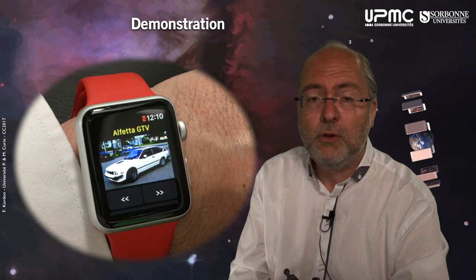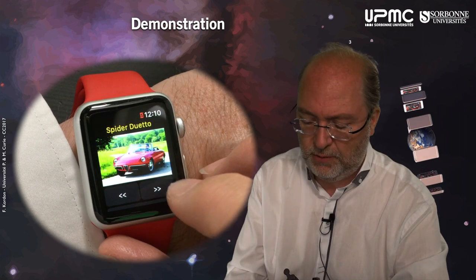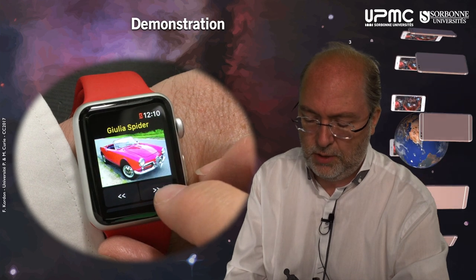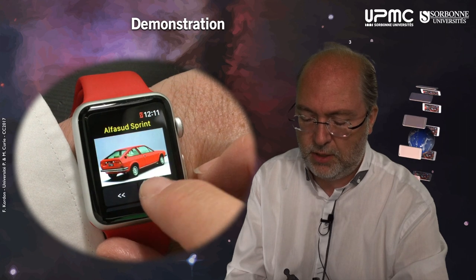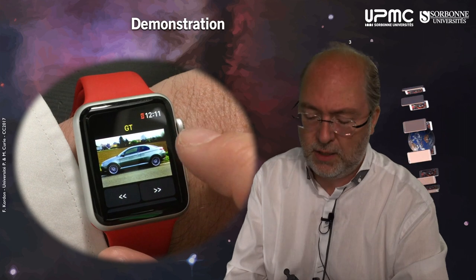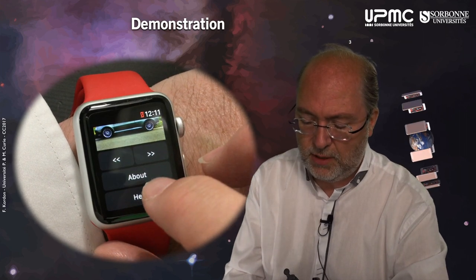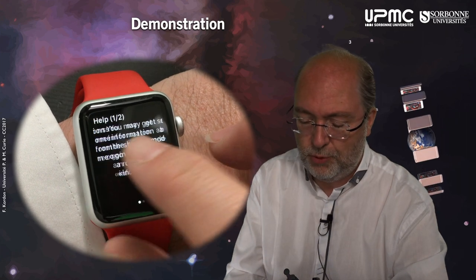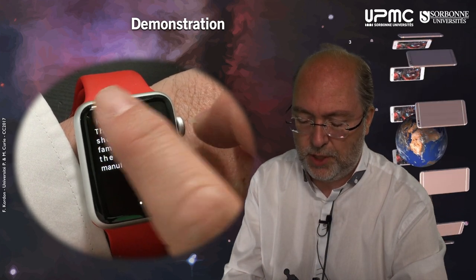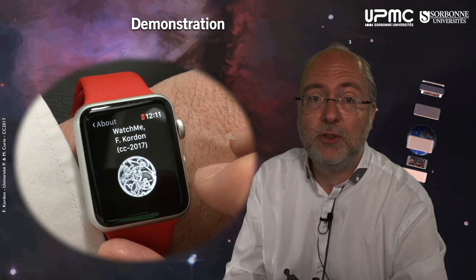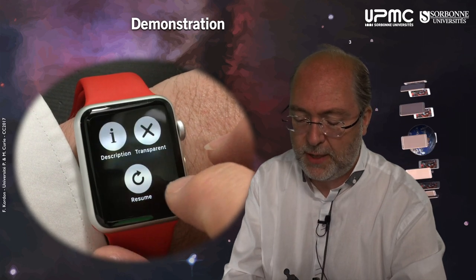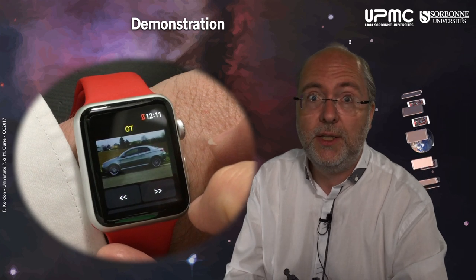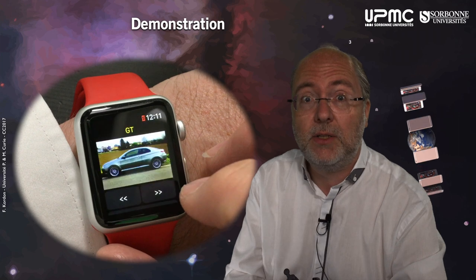Let's see how this watch app works. I launch it, and here I have a picture. If I change the picture, you can display other cars — like that, in that direction. I go back, and it's a cycle. As you see, I can get an explanation menu and go there to see the explanation. I return, and here I have access to the about application. If I force press, I can change the transparency of the image and restore it.